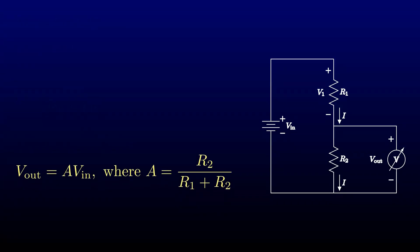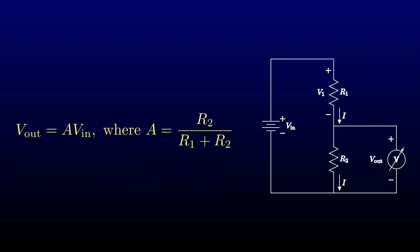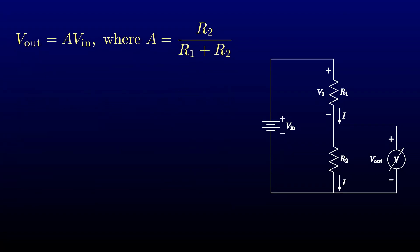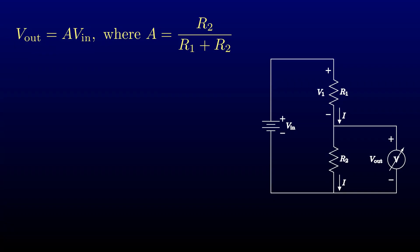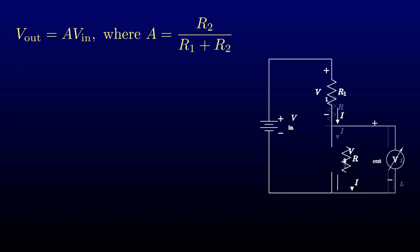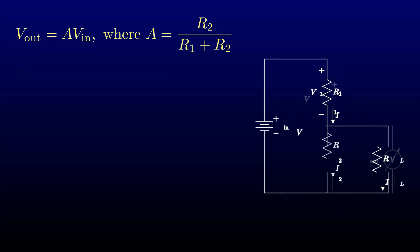Young players often make the mistake of trying to use something like R1 over R2. You can do it that way, but the algebra gets considerably messier. Of course, this voltage output is only valid if there's no load on the circuit. That's fine if we're driving something close to an ideal op-amp, for instance. But often we'll want to drive some load that consumes current.